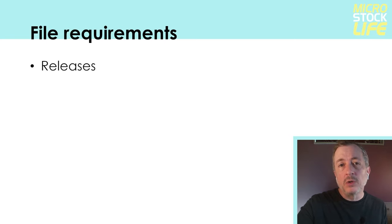For Shutterstock, file requirements for photos and non-vector illustrations are very similar to what you've seen at Adobe Stock — I've pasted the actual screen from their website for your reference. For vector illustrations at Shutterstock: up to 100 megabytes, no less than 4 megapixels, no greater than 25, and must be compatible with Adobe Illustrator 8 or 10. For video at Shutterstock, the stats are very similar to Adobe Stock — you can pause the screen to jot down any of this, and I'll include links to all requirements in the video notes. And finally, the video requirements at Storyblocks are fairly similar to what you've seen at Adobe Stock and Shutterstock — make sure you check them out and upload content that meets these requirements or it will be rejected.